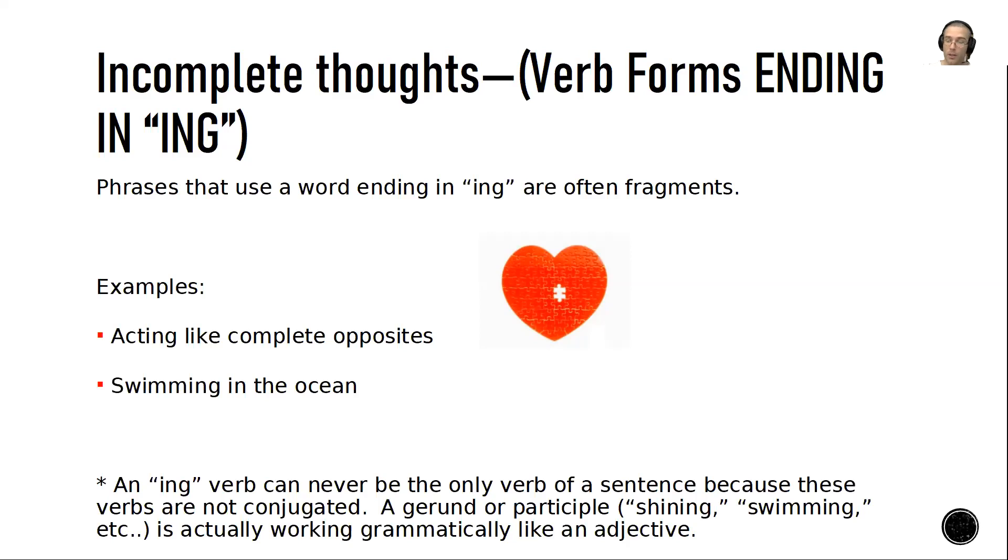An ING verb can never be the only verb in a sentence because these verbs are not conjugated. A gerund or participle—shining, swimming, or the like—is actually working grammatically like an adjective. Remember what we said about clauses and phrases, participle phrases, gerund phrases.